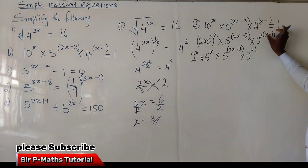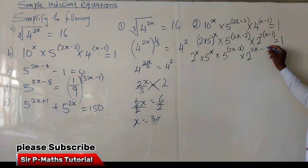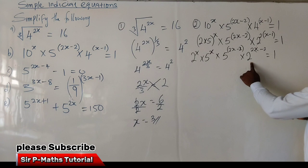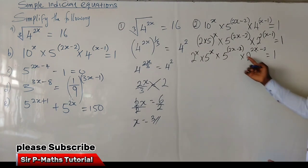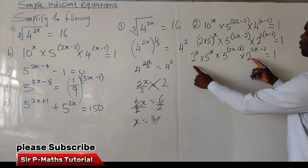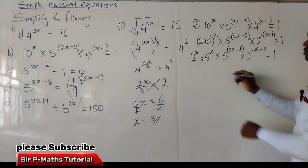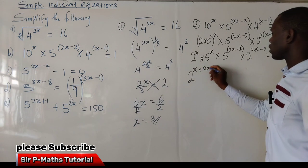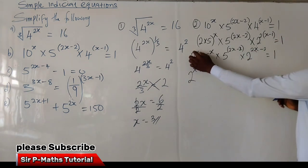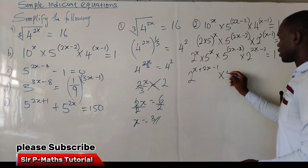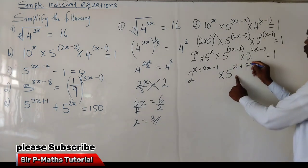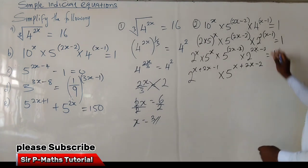Opening the bracket: 2 times x gives 2x, and 2 times minus 1 gives minus 2, equal to 1. Since I have two equal bases of 2, I can add their powers — one law of indices says that whenever you have two equal bases, add their powers and keep one base. So I have 2 raised to the power of x plus 2x minus 1, and similarly 5 raised to the power of x plus 2x minus 2.